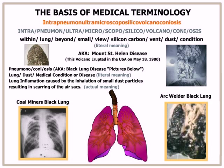Now let's pronounce this compound term again and give both its literal and actual meaning. The term is pronounced intra-pneumon-ultra-microscopico-silico-volcano-coniosis. Its literal meaning, starting from the back of the word and moving toward the front, is a condition or disease of dust vented from a volcano that is composed of silicon carbon fiber particles that you're going to be able to view or examine, that are very small but beyond normal vision, and they affect the lungs deep within.